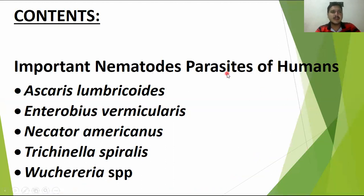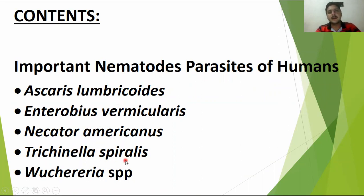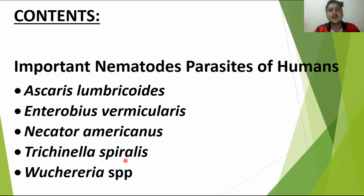The content includes some important nematode parasites of humans: Ascaris lumbricoides, Enterobius vermicularis, Necator americanus, Trichinella spiralis, and the last one is Wuchereria species. These are five different kinds of roundworm parasites of humans. In this first part of the video, we will discuss the first three: Ascaris lumbricoides, Enterobius vermicularis, and Necator americanus.